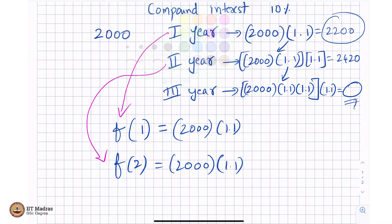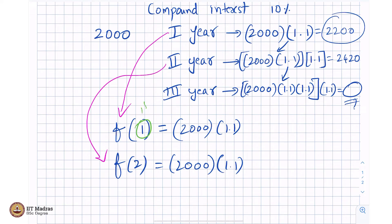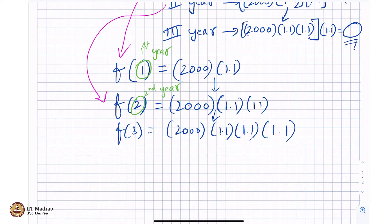f(2) will be whatever you had as f(1), which is at the end of 1 year - this stands for year. At the end of first year, end of second year and so on. In the language of mathematical functions, this is simply f(1) into 1.1. f(3) equals 2000 into 1.1 into 1.1, whatever that was at the end of second year times 1.1. This is all you mean by compound interest. And this leads to that formula: p into 1 plus r by 100 whole to the power of t.